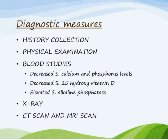These are the clinical features of osteomalacia. For diagnostic measures, the first important evaluation is history taking and history collection, which is common for every condition. Physical examination is also a very important diagnostic measure, as history helps detect the course of the condition and physical examination helps detect the symptoms.